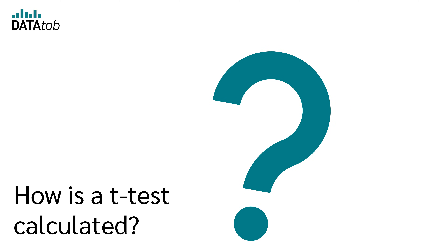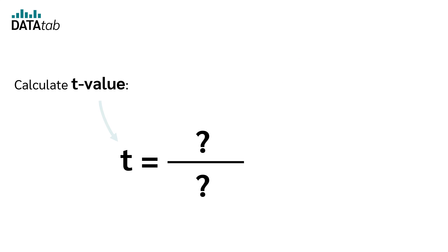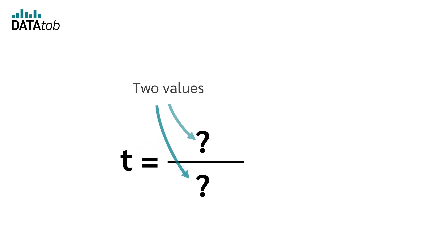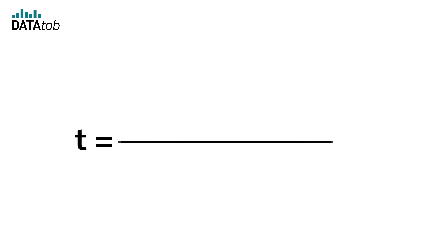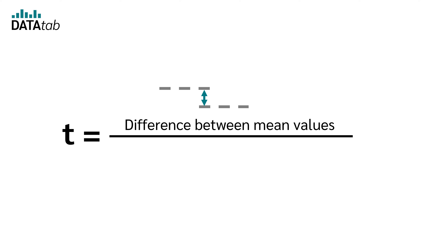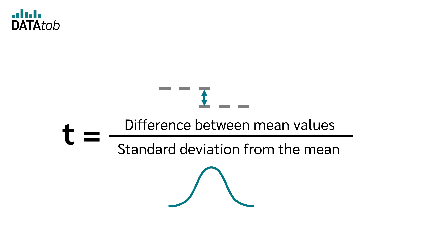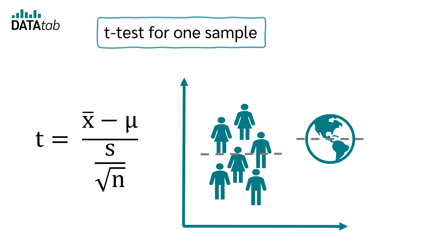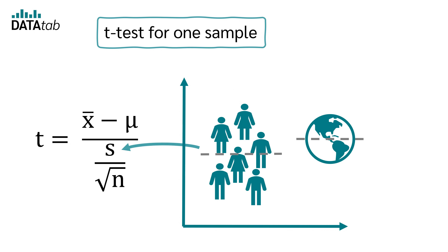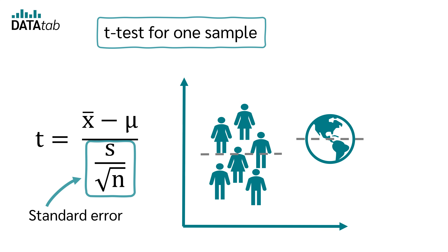How do we calculate a t-test? We first calculate the t-value, which requires two values: the difference between the means, and the standard deviation from the mean — also known as the standard error. In a one-sample t-test, we calculate the difference between the sample mean and the known reference mean. S is the standard deviation of the collected data and n is the number of cases. S divided by the square root of n is the standard error.